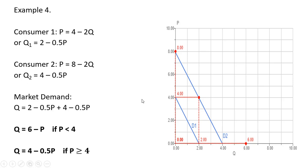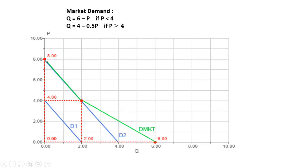Now I'll show it graphically. If the price is greater than or equal to 4, the market demand is given by the green line corresponding to consumer two's demand. If the price is less than $4, the market demand is the sum of D1 and D2 — adding those demand curves horizontally — and you get this green line for the market demand.